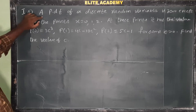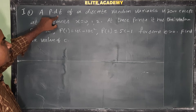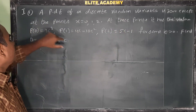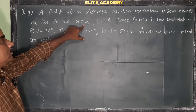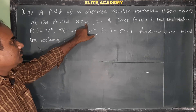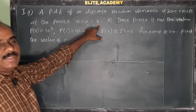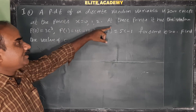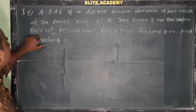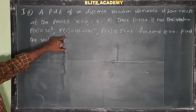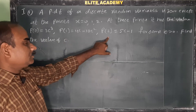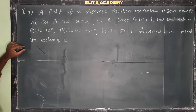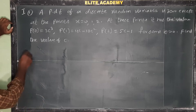Problem number one: the PDF (probability distribution function) of a discrete random variable is zero except at the points 0, 1, 2. At these points it has the values P(0) = 3c³, P(1) = 4c - 10c², P(2) = 5c - 1, for some c greater than zero. Find the value of c.